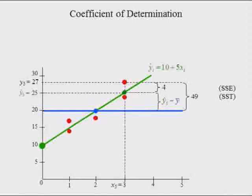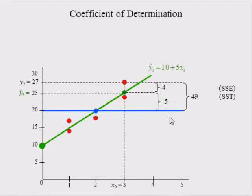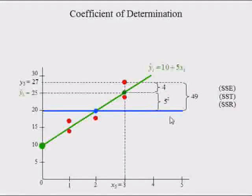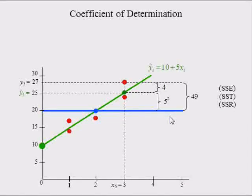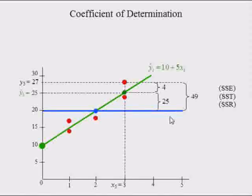The difference between the fifth predicted value of y and the mean of y is equal to 25 minus 20, which is 5. Since SSR equals the sum of squared deviations between the predicted values of y and the mean of y, the fifth deviation of 5 has to be squared, which equals 25. SSR is found by computing the remaining four squared deviations between the predicted values of y and the mean of y, and then summing all five.